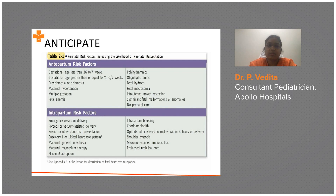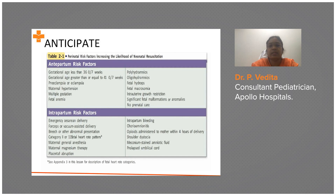When called to a delivery, anticipate by asking about risk factors: gestational age less than 36 weeks, antenatal risk factors like eclampsia, preeclampsia, maternal hypertension, multiple gestation, fetal anemia, polyhydramnios, oligohydramnios, fetal hydrops, macrosomia, intrauterine growth restriction, and any fetal malformations identified on antenatal scans.